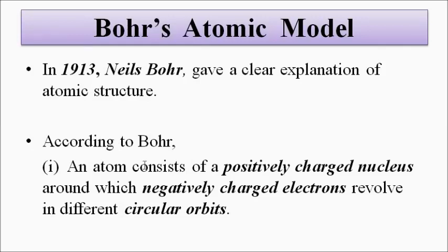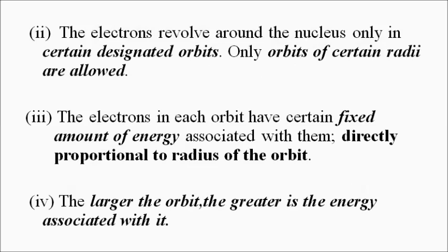Based on that, the conclusions we can draw from Bohr's atomic model are: an atom consists of a positively charged nucleus consisting of protons and neutrons, around which the negatively charged electrons revolve in certain fixed circular paths. The electrons revolve around the nucleus in fixed, designated orbits, and the radius of those orbits is fixed — a fixed distance from the nucleus.